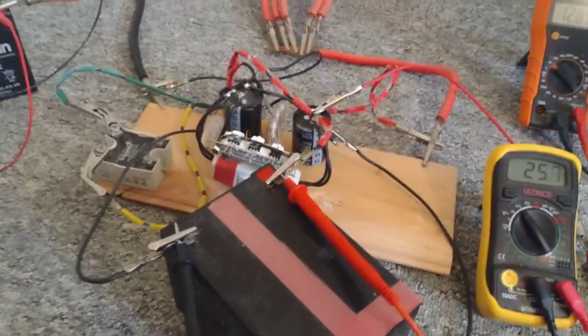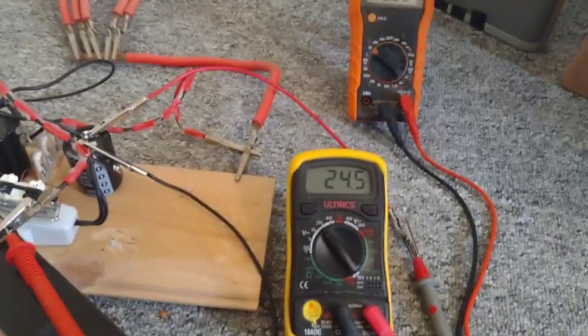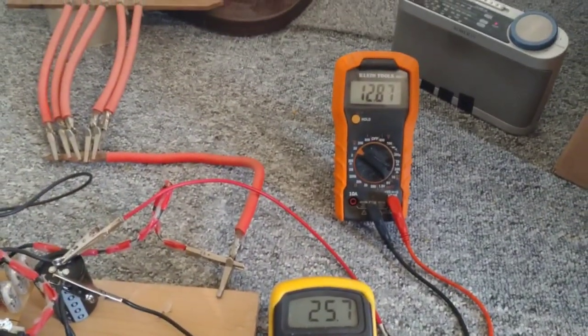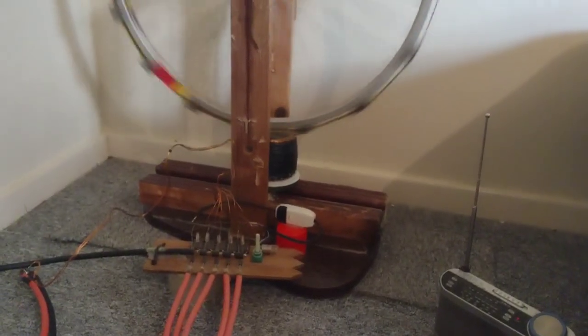But if you want it to discharge slower, just increase the capacitance. Which I might do again at some point, or move the rotor away from the stator, is another way of doing it.